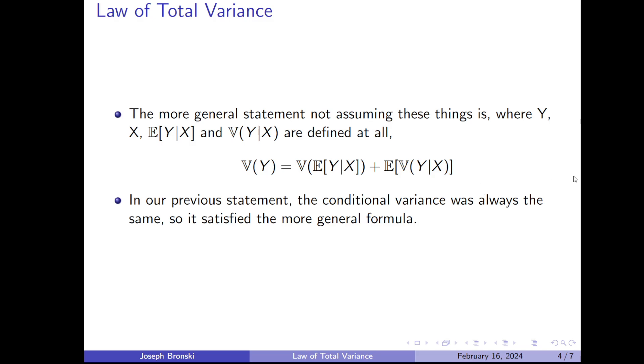The law of total variance states: the variance of Y equals the variance of the expected value of Y given X, plus the expected value of the variance of Y given X. In linear regression that is standard and homoscedastic, the variance of Y given X is constant, so taking the expectation is not necessary. But for any expectation function Y given X, you can break down the variance like this — and that is the law of total variance.